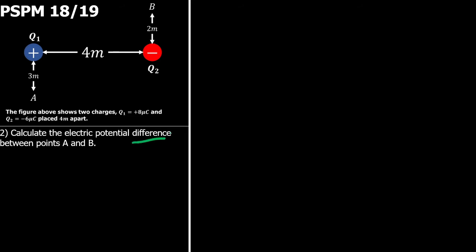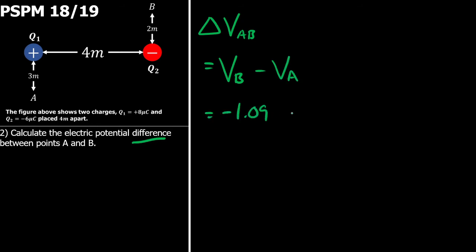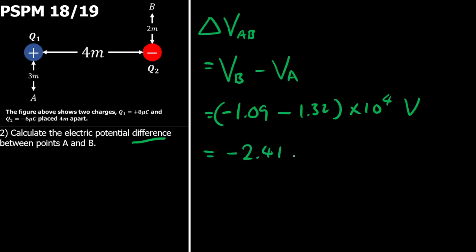So let's look at the next question. The next question asks: calculate the electric potential difference between points A and B. Remember that whenever you see the word difference, we'll just write down delta. So the difference between A and B would be the potential at B minus the potential at A. That is negative 1.09 minus 1.32, both multiplied with 10 to the power of 4 volts. That gives you an answer of around 2.41 times 10 to the power of 4 volts.